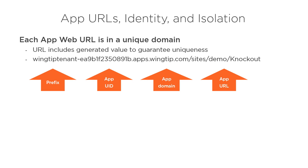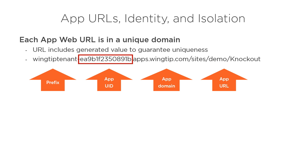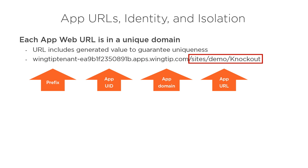Before we discuss why each app web has a unique domain, let's look at the structure of the URL. The first part — that's the part before the dash — is called the prefix. The second part is called the unique identifier, or the app UID; this value is generated when the app is installed. The third part, app.wingtip.com in the slide example, is known as the app domain. The fourth part is the relative URL to the app web.